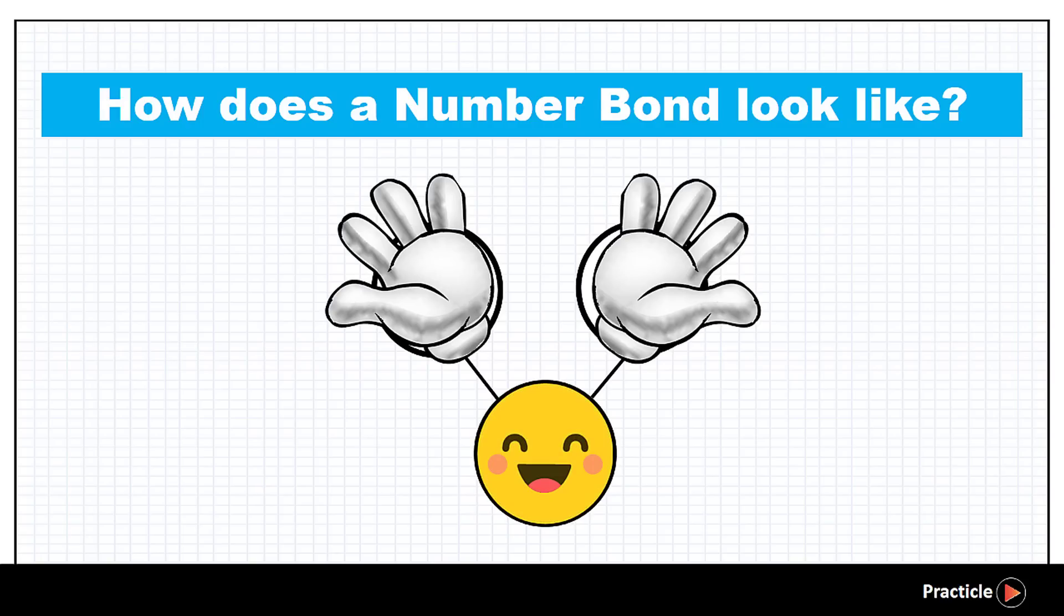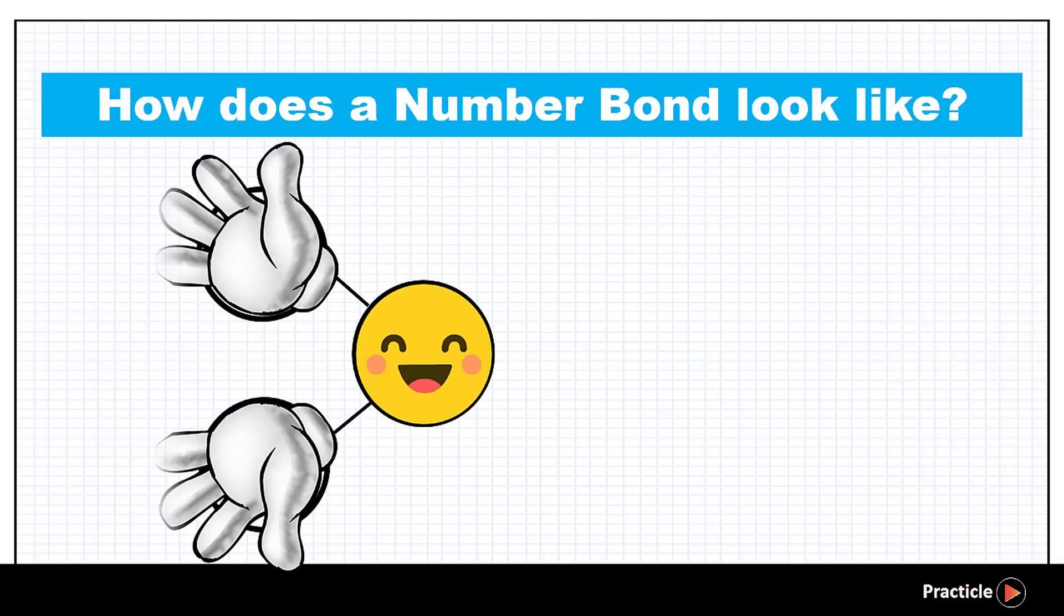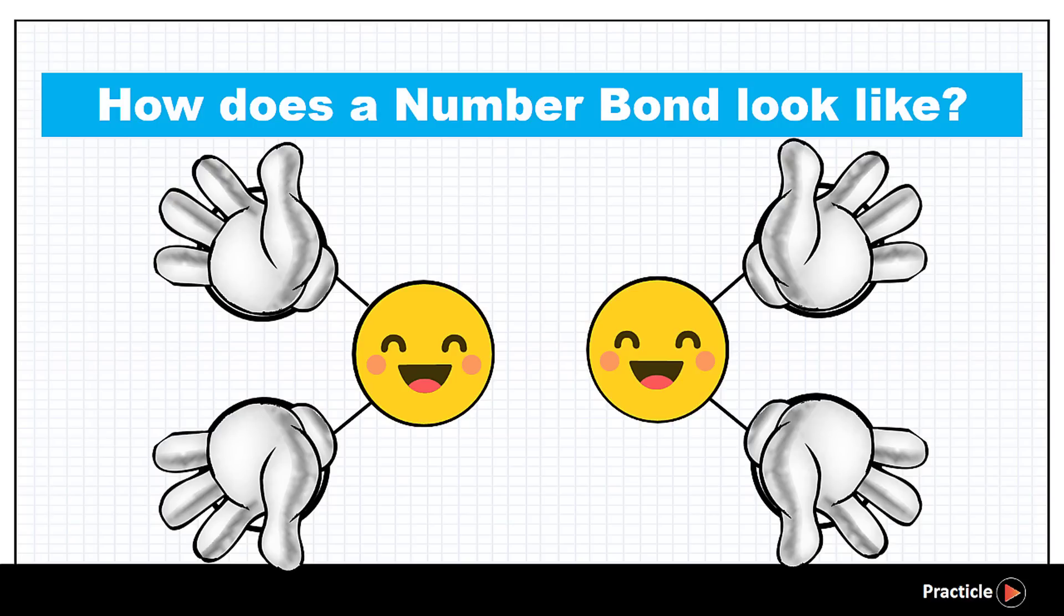And sometimes, the number bond you see may have 2 circles on the left and each one of them connects to a common circle on the right just like a person who is stretching out his hands to the left. And yup, sometimes you might see that person turning in the opposite direction.